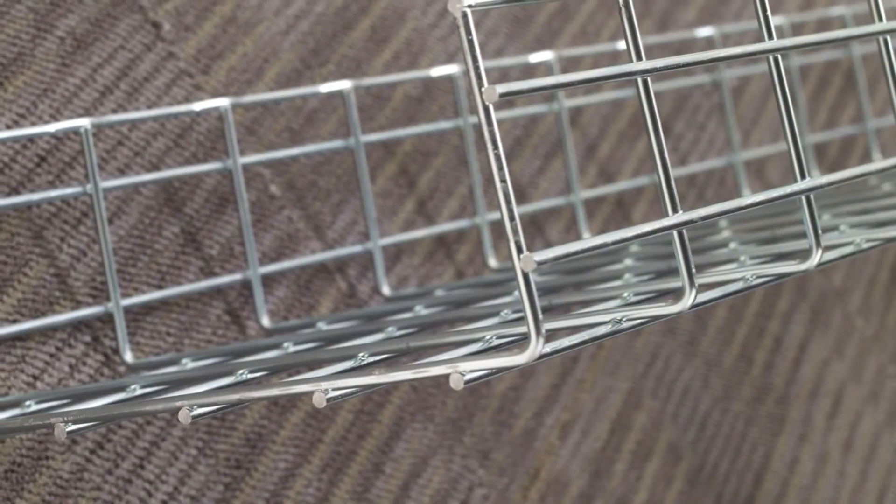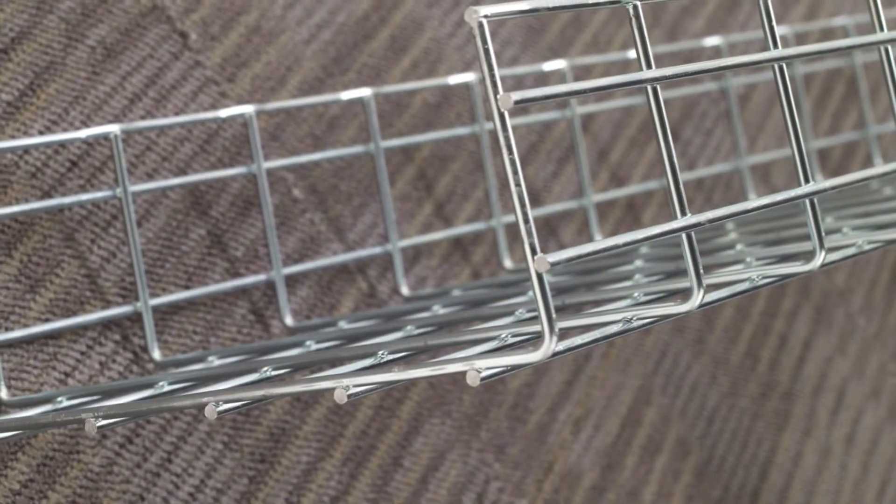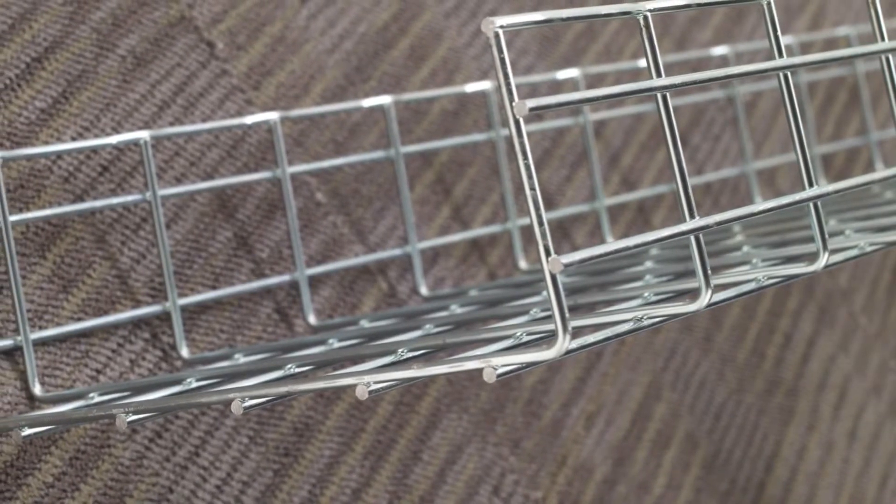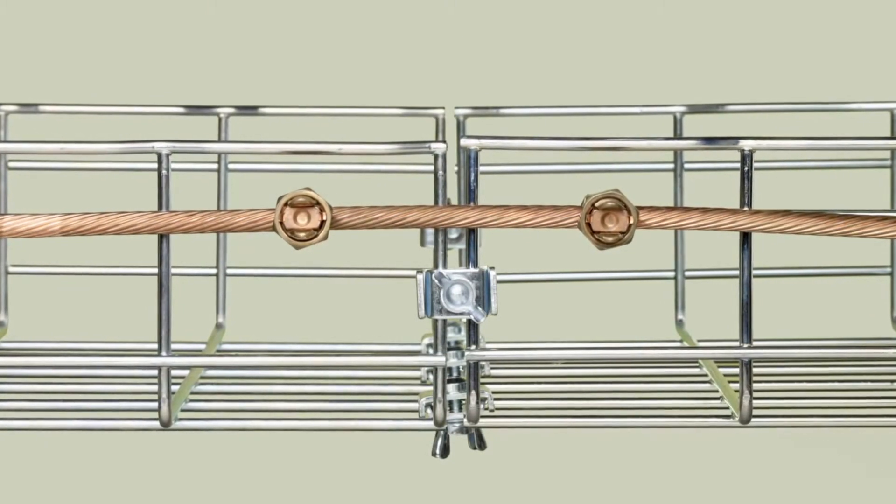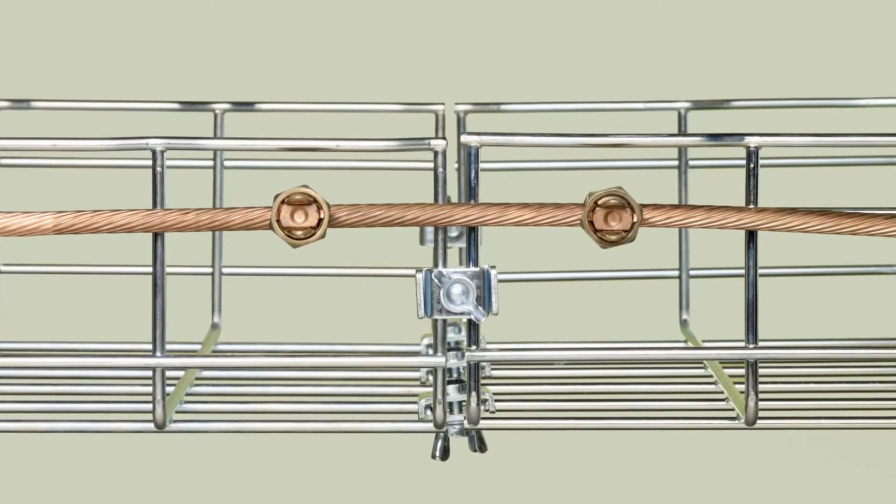FlexTray utilizes the largest gauge steel in the industry to give you stronger trays. FlexTray offers one of the largest range of sizes available, and FlexTray is also UL classified as an equipment grounding conductor, saving you time and money during the installation process.